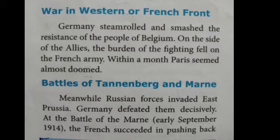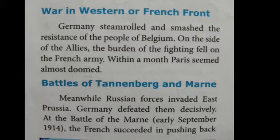Battles of Tannenberg and Marne: Battle of Tannenberg was in East Prussia; Battle of Marne — spelled M-A-R-N-E, the E is silent — was near Paris, France. Russian forces invaded East Prussia but Germany defeated them. The Battle of Marne was held in early September 1914. The French army got victory and Germany was pushed back.